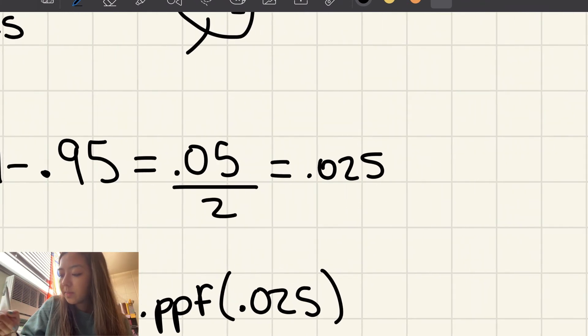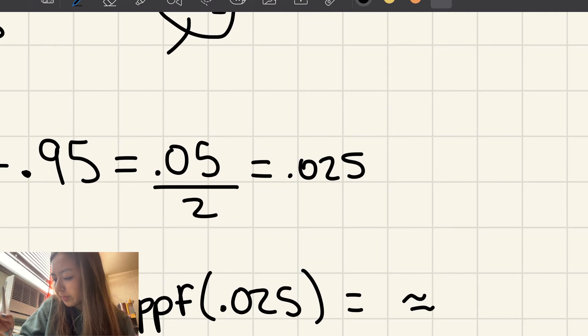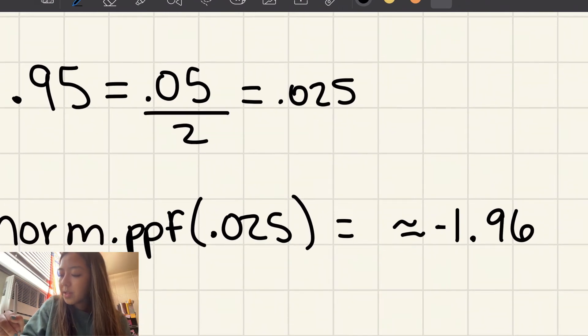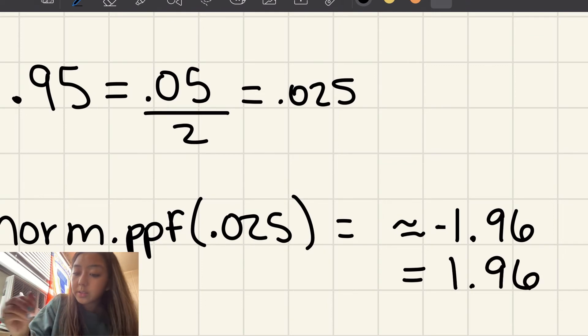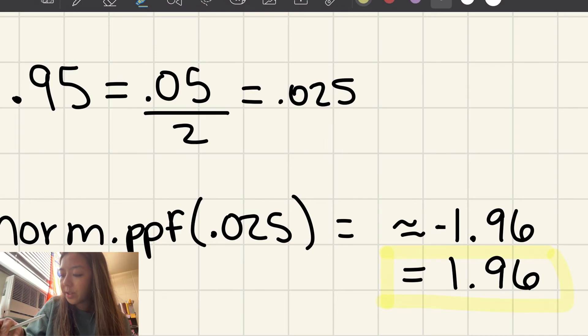And that's going to give you something, when you plug that into Python, that's going to give you around 1.96. Python might give you negative 1.96, but when we're working with confidence intervals, just always use the positive one. So that's going to be our final z-score for our 95% confidence interval.